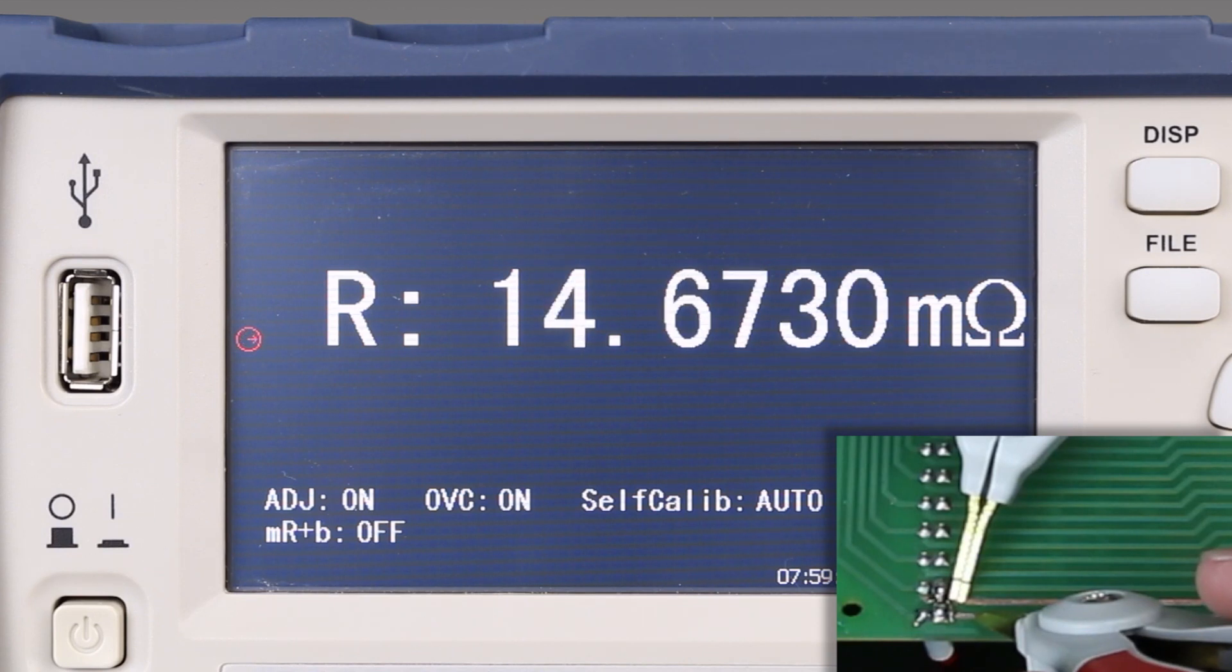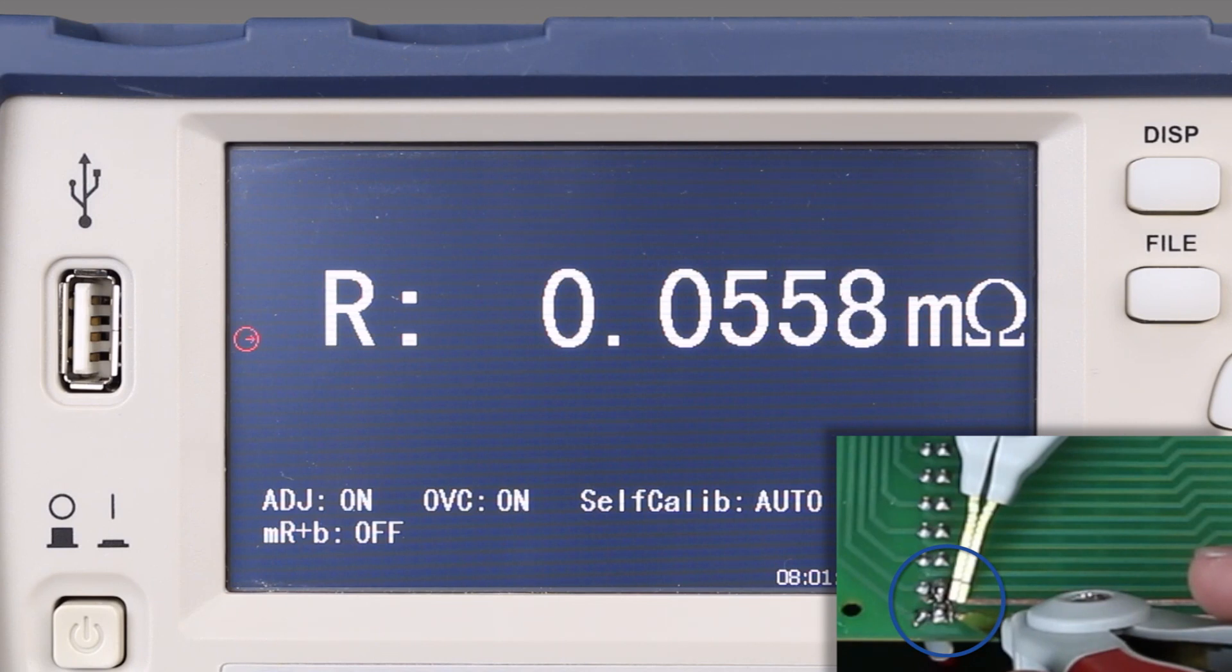The resistance is continuing to drop very close to zero ohms, so the short is around these solder joints.